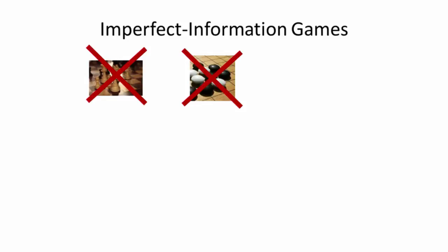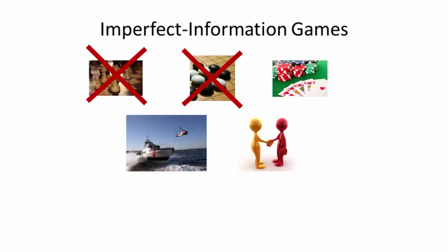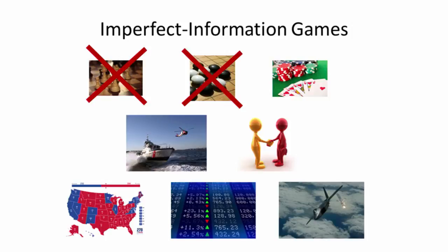Now this paper focuses on imperfect information games. These are not games like chess or Go, but rather games like poker, or more generally any strategic interaction that involves hidden information. And I see this line of research as being particularly relevant to bringing AI into the real world, because most real-world strategic interactions involve some amount of hidden information.